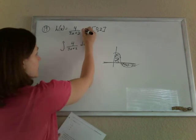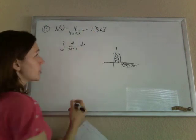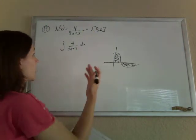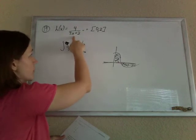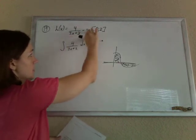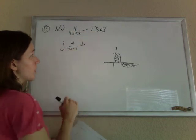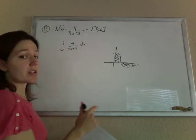But we can tell that this thing here, if you try to set it equal to 0, that's never going to equal 0 because 4 over something, you can't get that to 0. If you were to multiply both sides by the bottom, 4 will never equal 0. It's just not going to happen.